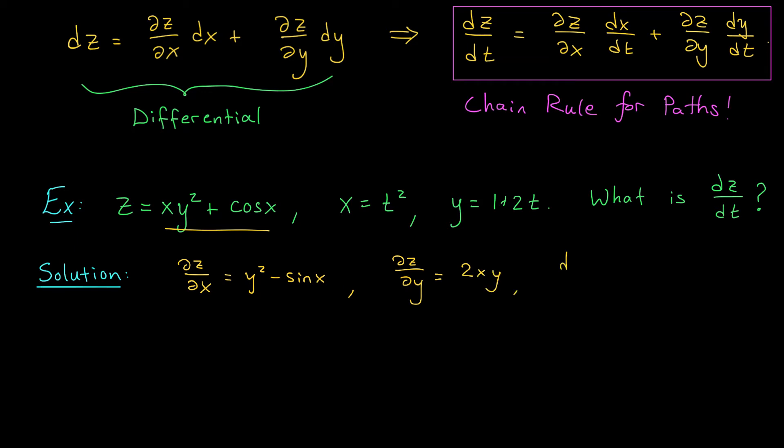Additionally, the derivative of x with respect to time is 2t and the derivative of y with respect to time is just 2. So if I now wish to know dz by dt, well, by the chain rule for paths, dz by dt is the partial with respect to x times dx by dt plus the partial with respect to y times dy by dt.